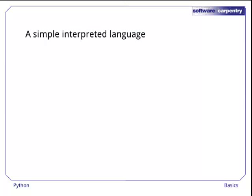Python is a simple interpreted language. The word interpreted means that unlike programs in C, Java, Fortran, and C Sharp, Python programs don't have to be compiled before they can be run. Commands are executed immediately.